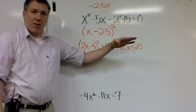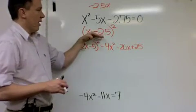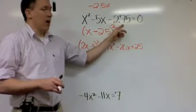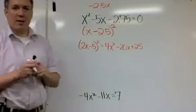But now I need to sort of figure out what I've changed, right? This is not the factor of this, because if you square negative 2.5, you get 6.25, not negative 2.75. So these are not equivalent statements yet.